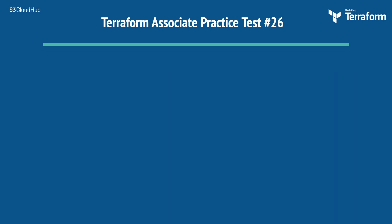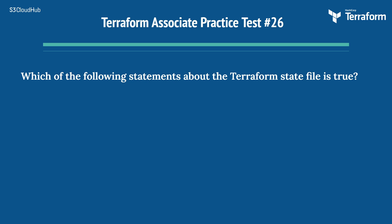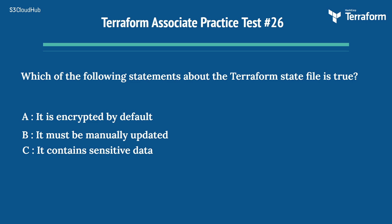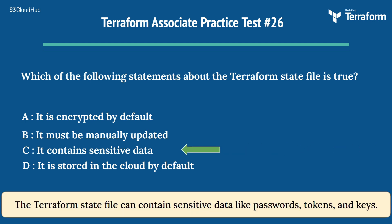The twenty-sixth question is: which of the following statements about the Terraform state file is true? Option A: it is encrypted by default. Option B: it must be manually updated. Option C: it contains sensitive data. Option D: it is stored in the cloud by default. The right answer is Option C: it contains sensitive data. The Terraform state file can contain sensitive data like passwords, tokens, and keys.